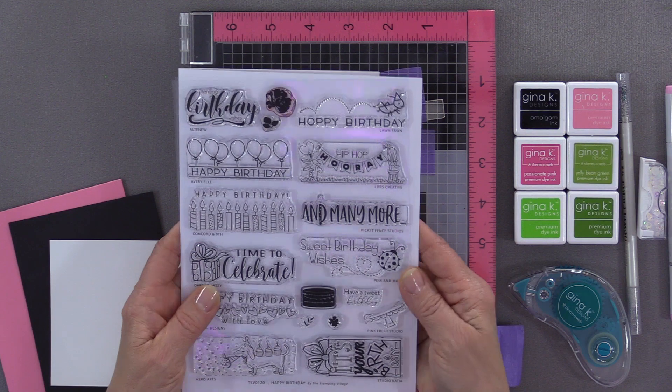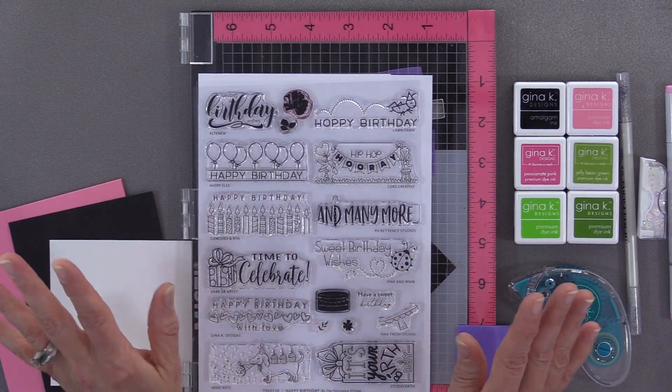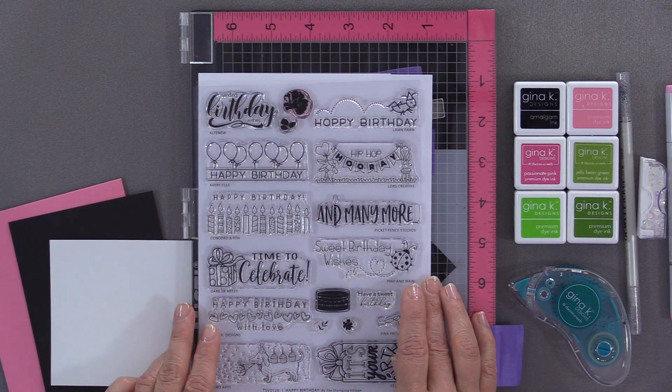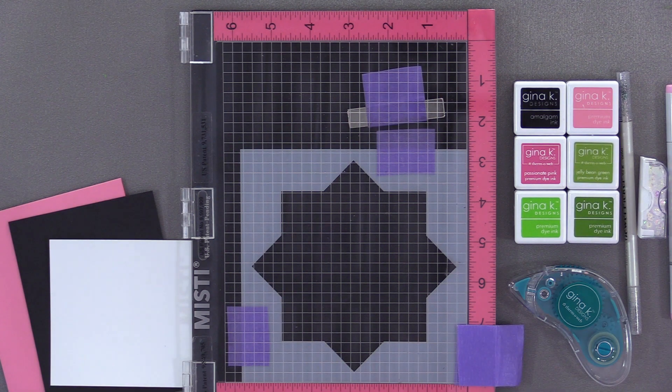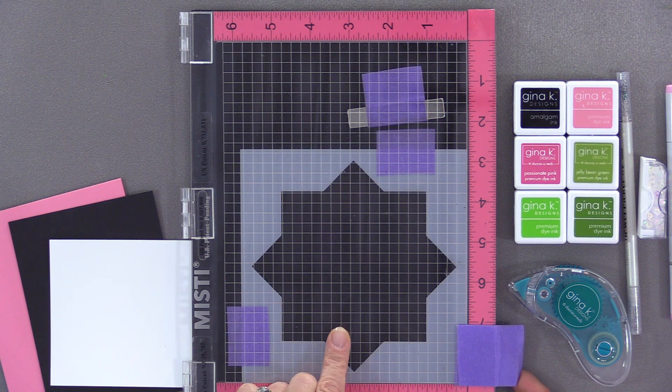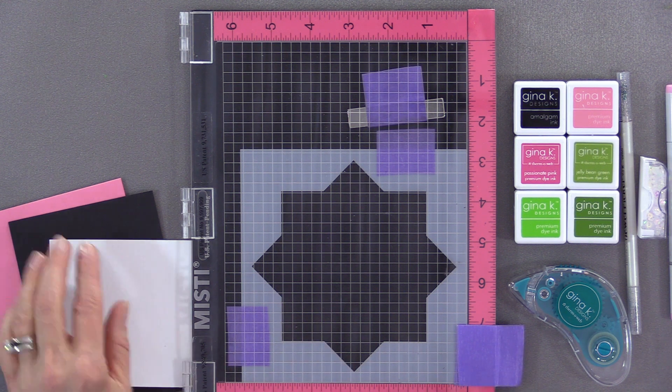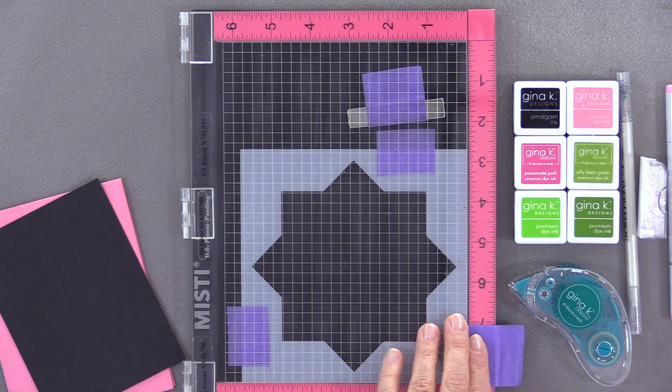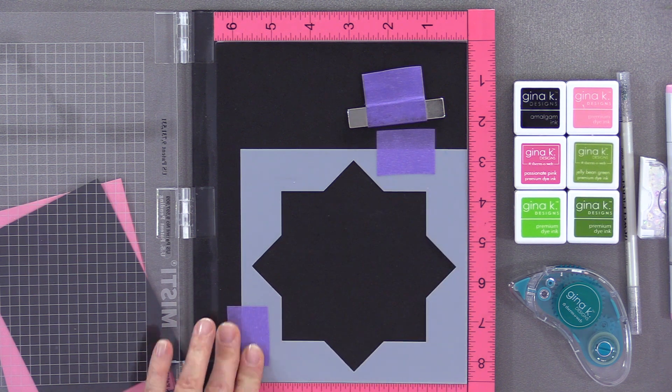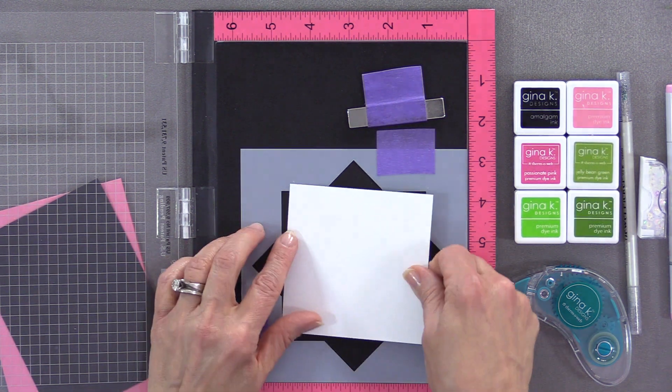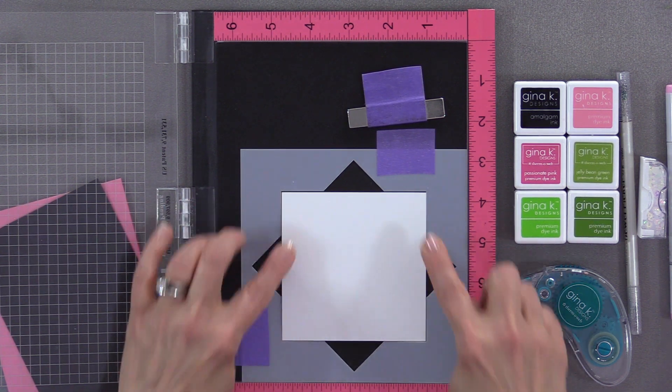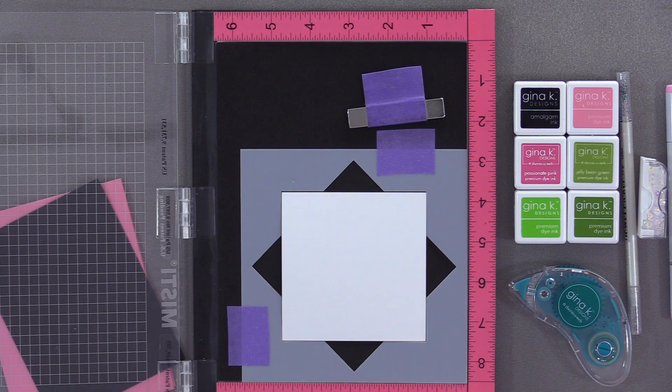When I first saw this stamp set complete, the first thing I thought of was these cute little tiny images would be perfect for the Wreath Builder. I'm going to make a card for you today using those tiny images with the Wreath Builder template. If you've never seen the Wreath Builder before, I have a whole playlist on my YouTube channel, but basically it's a template that allows you to stamp in a circular pattern. I have here a piece of cardstock cut down to the perfect size and I'm going to place it into the template in the square orientation.